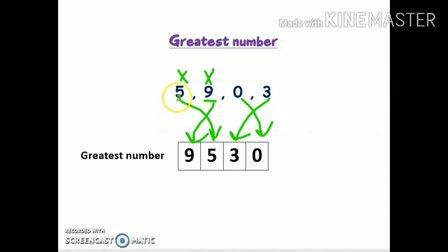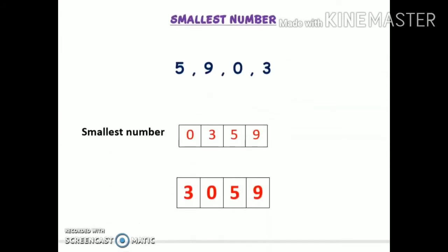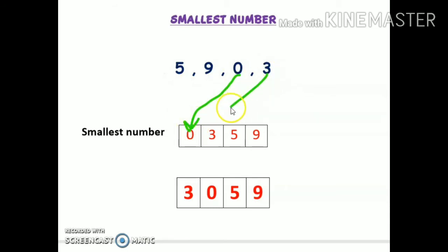Similarly, for forming the smallest number, we are given four numbers: five, nine, zero, and three. We have to form the smallest four-digit number out of these four numbers. Now, many of you will say that zero is the smallest number, so you will write zero, then three, then five, and then nine, saying that this is the smallest four-digit number. But when you read this number — three hundred fifty-nine — you will realize it is not a four-digit number; it's a three-digit number.